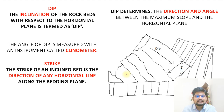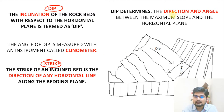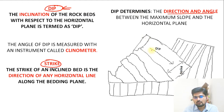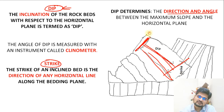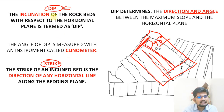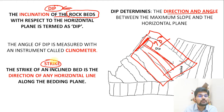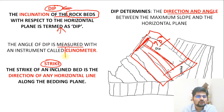Important terms when studying faults include dip, strike, direction, and angle. Dip refers to the inclination of the rock beds — the angle at which the strata have dipped. The dip angle is measured using an instrument called a clinometer. Dip determines the direction and angle between the maximum slope and the horizontal plane, which is why it is important when studying slopes.